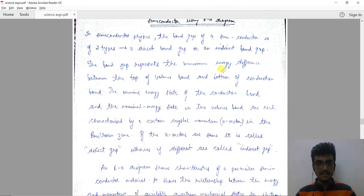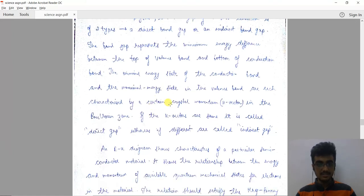The band gap represents the minimum energy difference between the top of the valence band and the bottom of the conduction band. The minimal energy state of the conduction band and the maximum energy state in the valence band are each characterized by a certain crystal momentum vector, which is the K vector in the Brillouin zone.